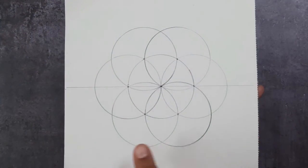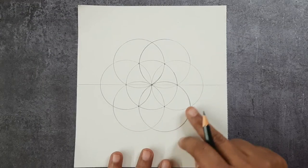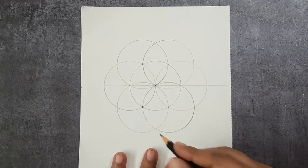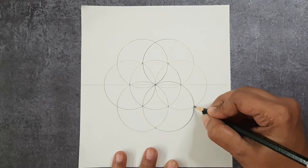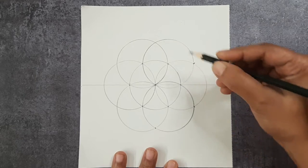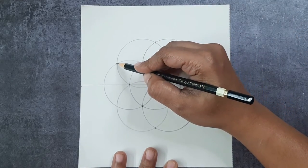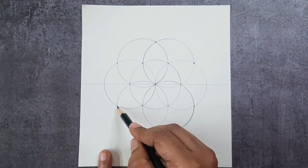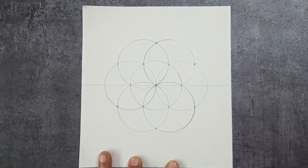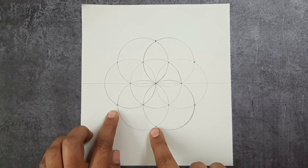If you see, the initial pattern of seed of life is done. Now there are multiple intersection points that are created. This is one, this is two, here is the third one, this is the fourth one and this is the fifth one, and here is the sixth one. Now keeping these intersection points as center I'm going to draw circles.